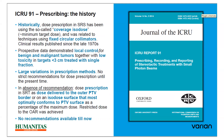Prospective data demonstrate local control for benign and malignant tumors together with low toxicity in targets less than 3 cm treated with single fraction. There is large variation in prescription methods and no strict recommendation for dose prescription until the present time. In the absence of recommendations, dose prescription in SRT is defined as dose delivered to the outer PTV border or an isodose surface that most optimally conformed to the PTV surface, as a percentage of maximum dose, while restricted dose to the OAR was achieved.